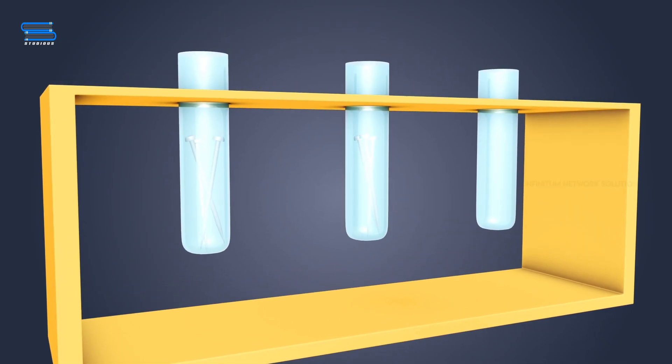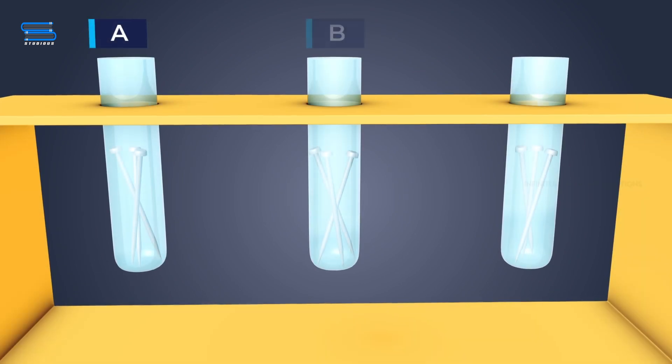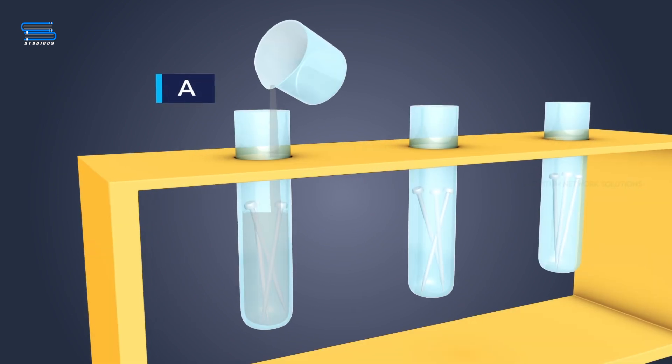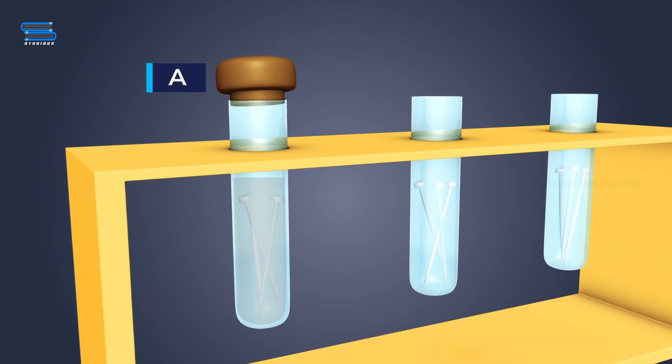Place clean iron nails in three test tubes that are labeled as A, B, and C. Some water should be poured into test tube A, and a cork should be placed on it.